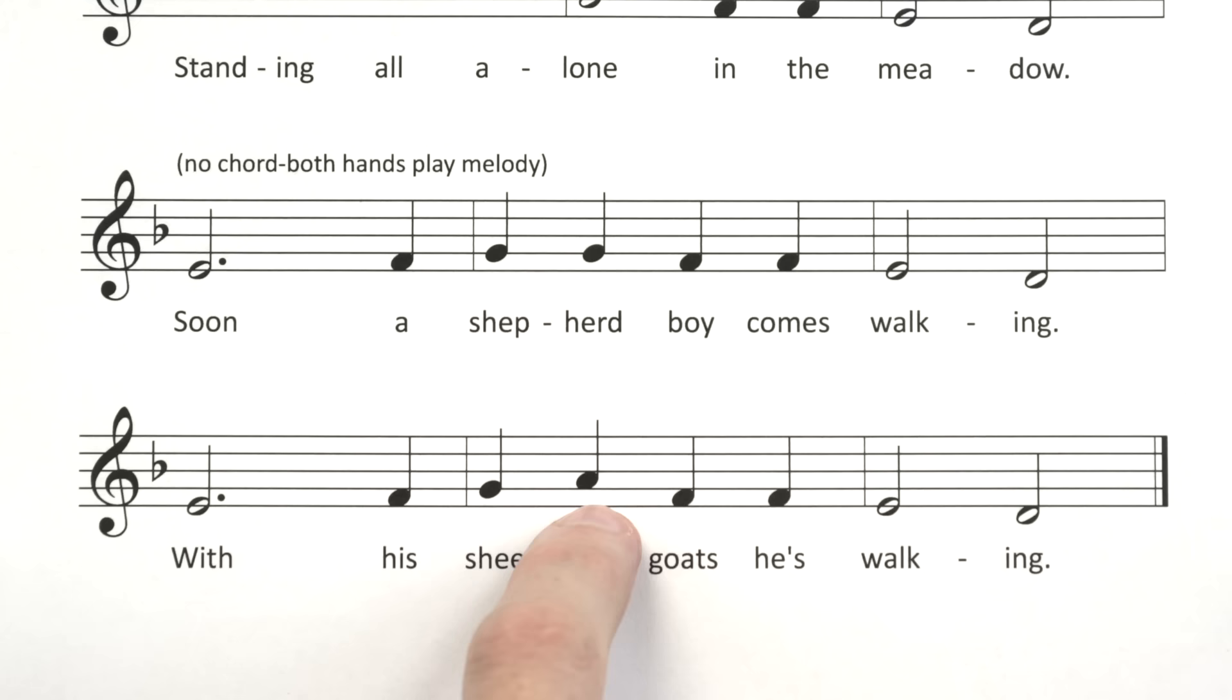If you're pointing right here you're correct. This time instead of repeating on the G, it goes G and then step up to A, and then skip down to F, repeat, step down, step down. So let's say all the step skips repeats for this line together. Go. Start, say it with me, start, step up, step up, step up, skip down, repeat, step down, step down.